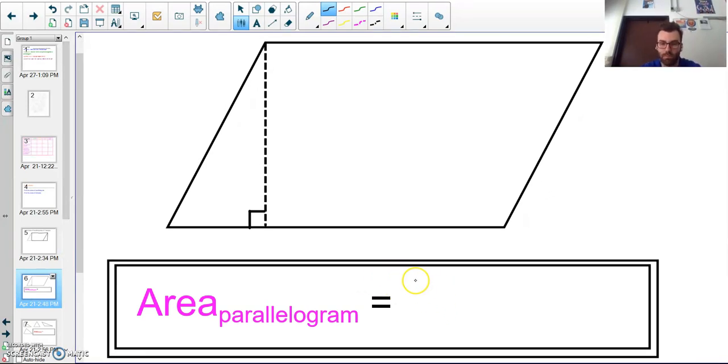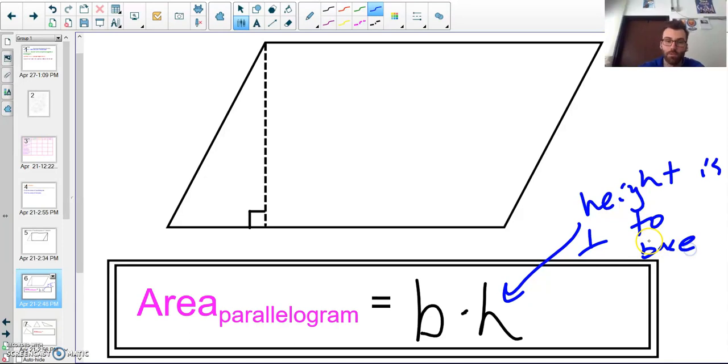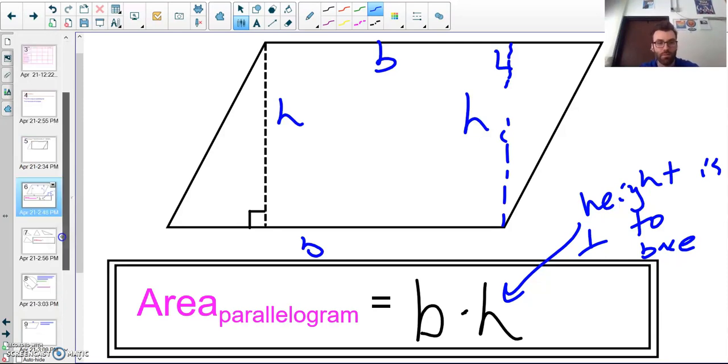To find the area of a parallelogram, I do base times height. The height is perpendicular to your base. This would be considered the height right there, and this would be considered my base. This could also be considered the height and this would be the base, since both these sides are congruent as well.